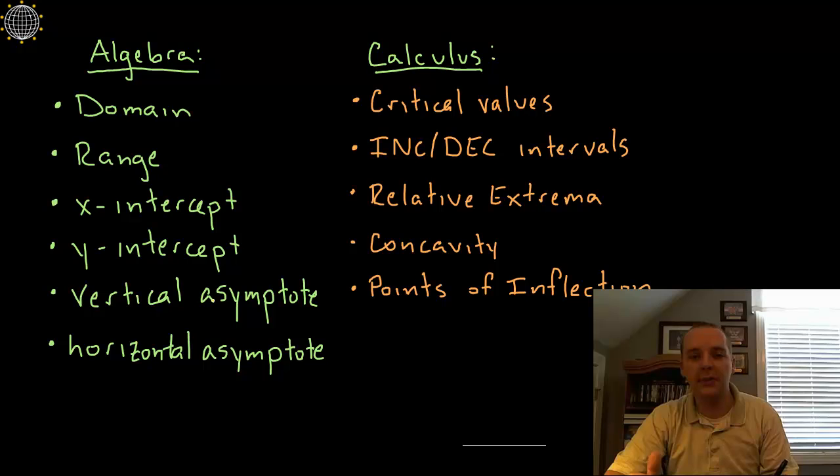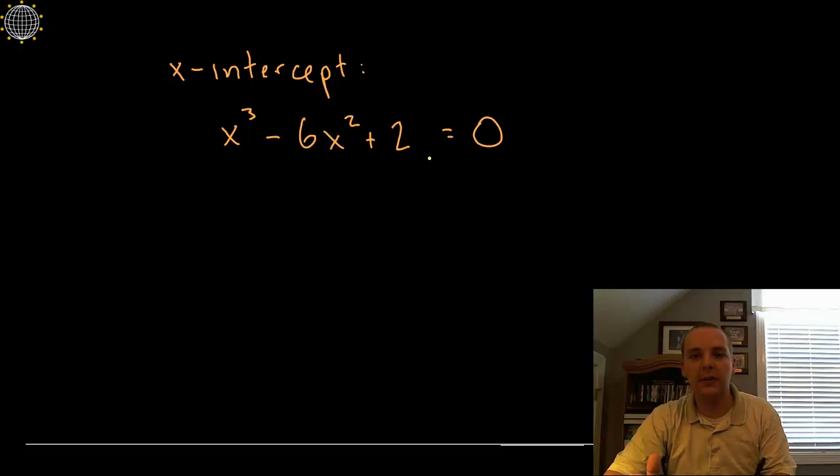Not everything is going to be applicable for every function in this algebra column. For example, not every function has a vertical asymptote. So some of these might be none or we might simply just skip some. Let's start with the x-intercept. For that we're going to take the function and set it equal to zero and right off the bat I see this is not very straightforward. We don't just simply take cubics and factor them every day into three different factors.